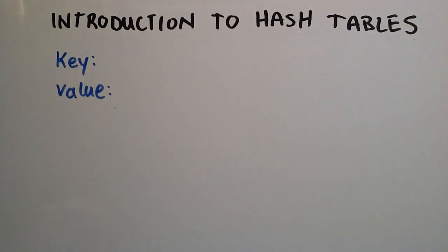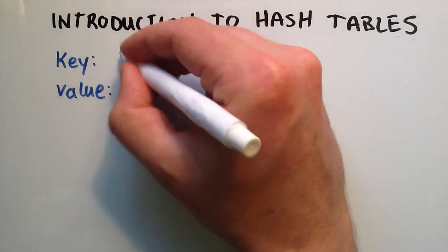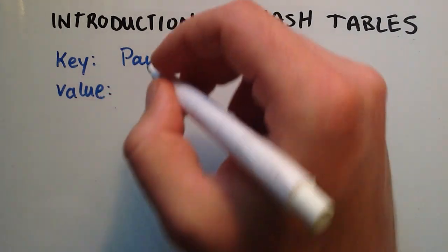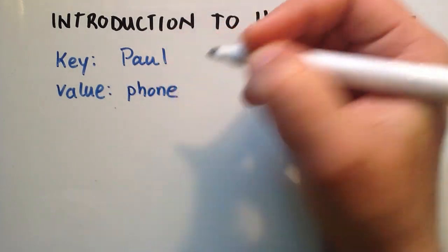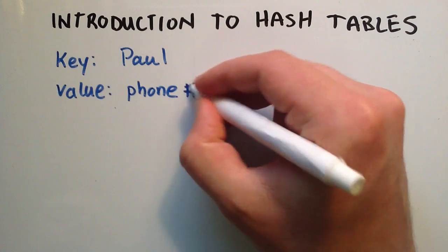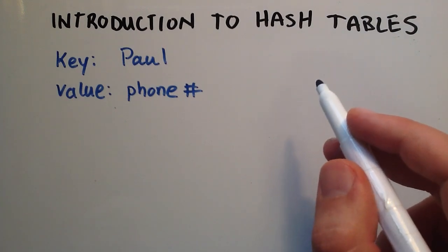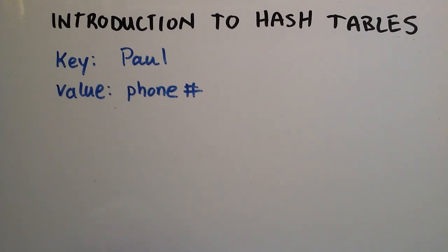Basically a key could be something like, for instance, my name, and the value could be something like my phone number. So we could basically create a hash table to store a bunch of people's phone numbers. What happens is the hash table is a way that we can implement an associative array, and we're basically going to map this key to this value here.